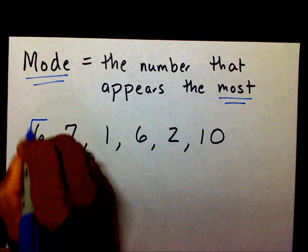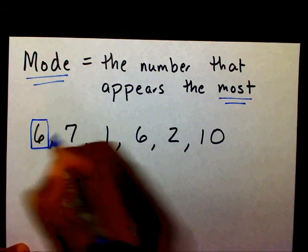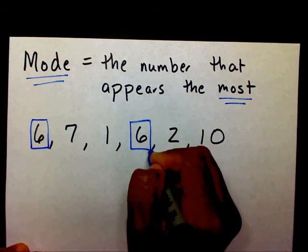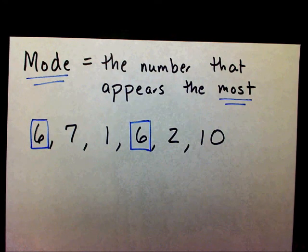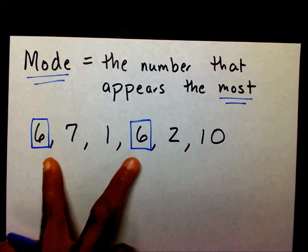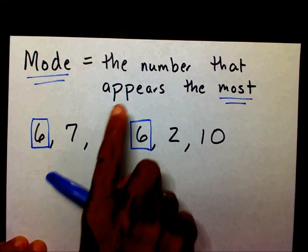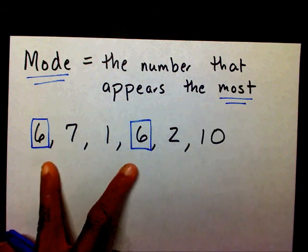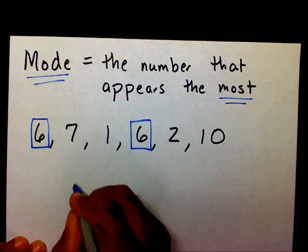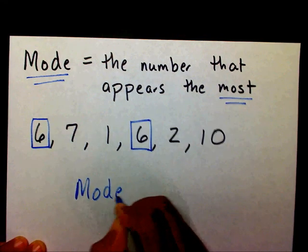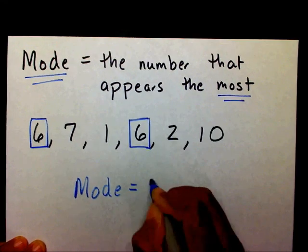You see a 6 here, and you see a 6 here. So therefore, since you see the 6 twice, it appears the most, so my mode is 6.